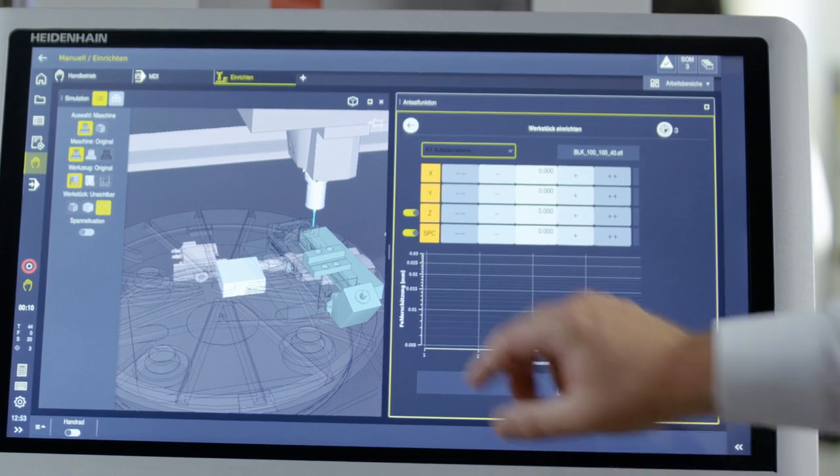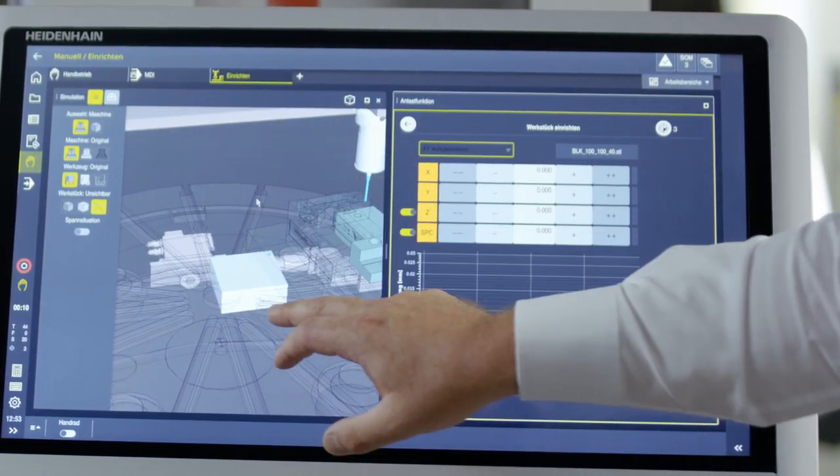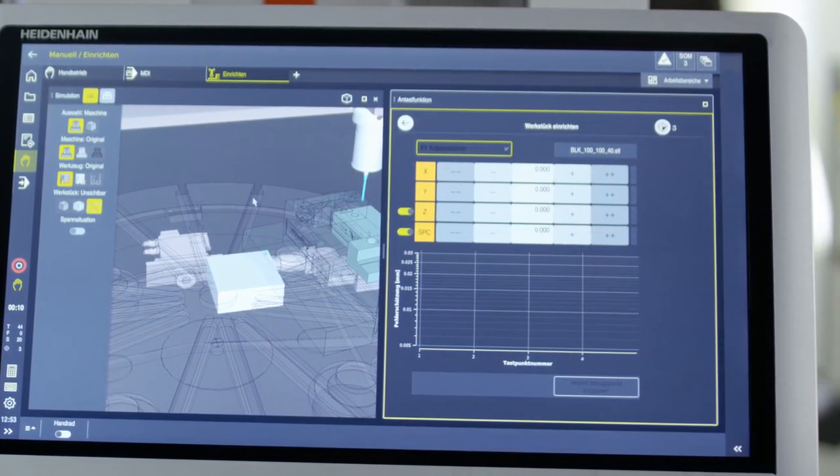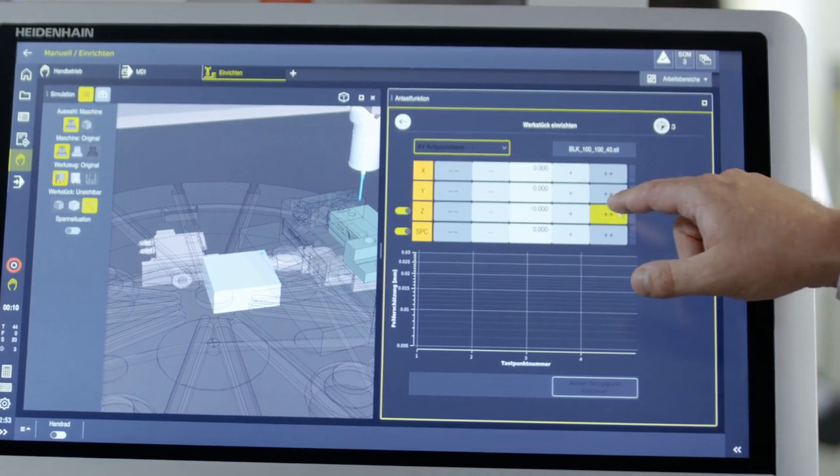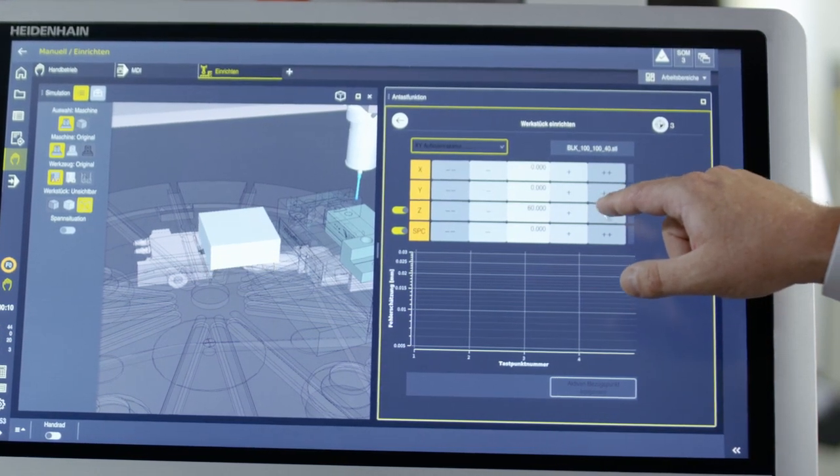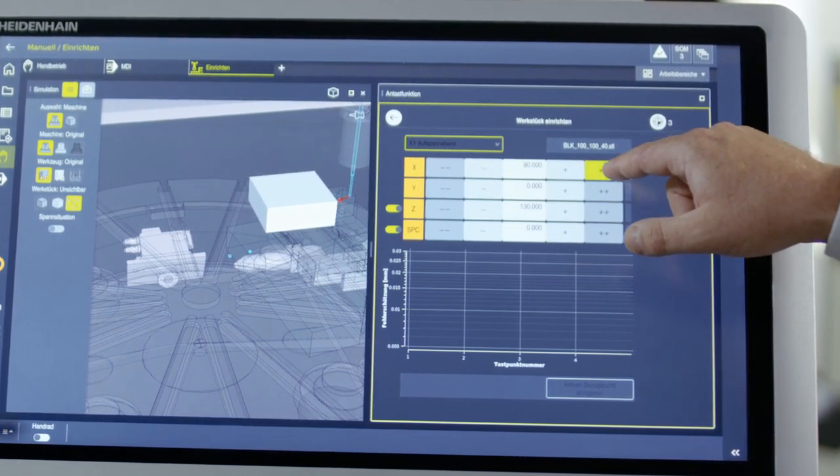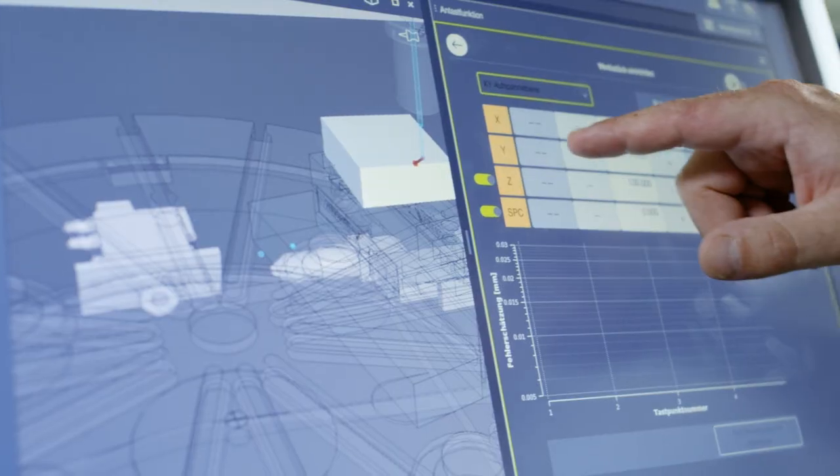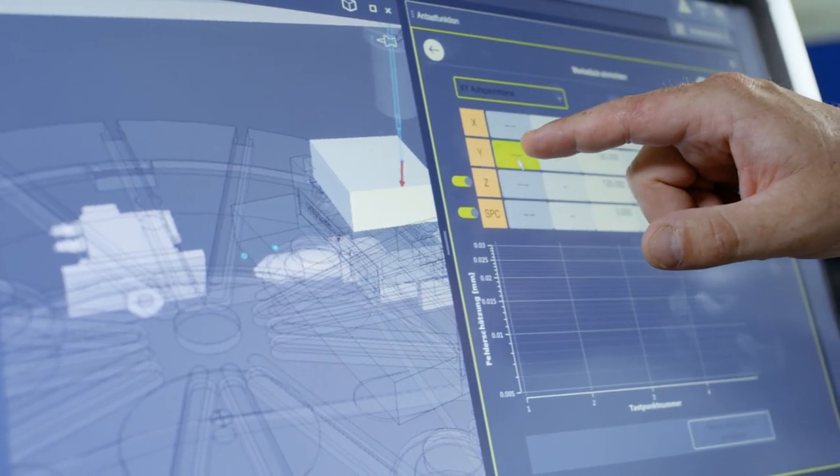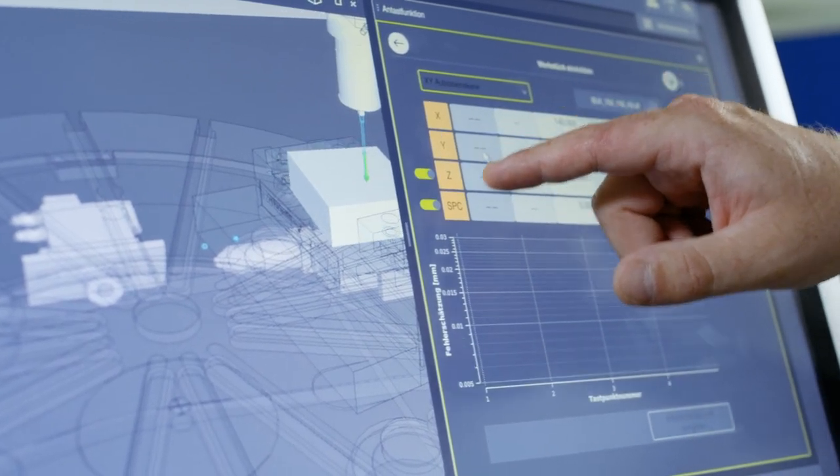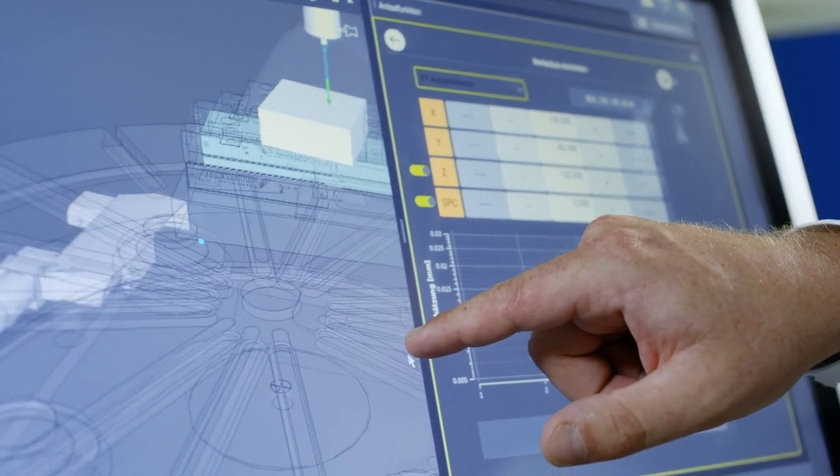Here on the screen we see that the 3D model is placed on the table, and I can move it into position using the access keys until it is located in the vise. As we can see, the probe has already detected the workpiece, but the arrow is still red.